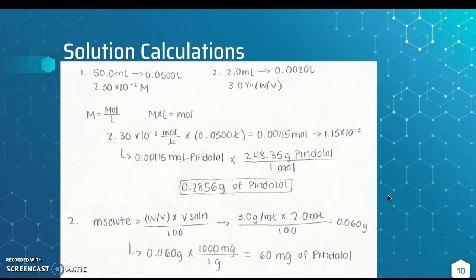For the second question on this page, we are asked to calculate how many milligrams of the drug are contained in 2.0 milliliters of a 3% solution. We do this by multiplying 3.0 grams over milliliters by 2.0 milliliters and dividing that by 100. The milliliters cancel out and the equation gives us 0.060 grams. Then we convert grams to milligrams by multiplying 0.060 grams by 1,000 milligrams over 1 gram, which gives us 60 milligrams of Pindolol.